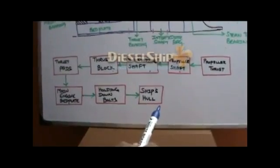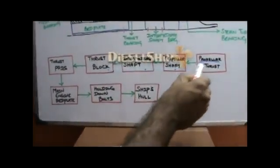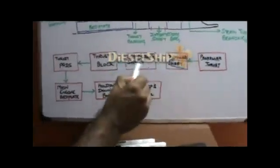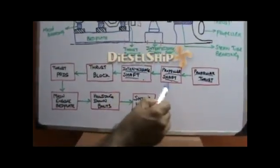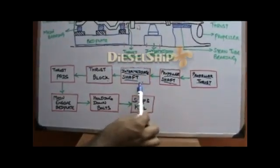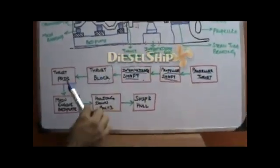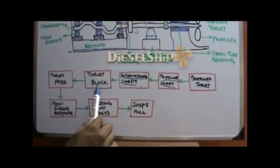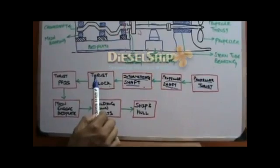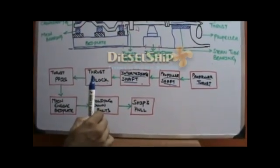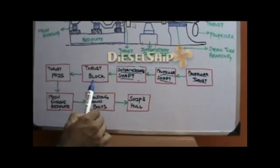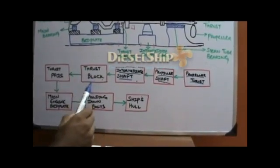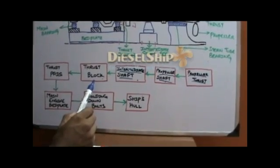As the propeller rotates, it creates a thrust called propeller thrust, which is taken up by the propeller shaft and passed on to the intermediate shaft. This happens because the propeller shaft and intermediate shaft are connected together, and the thrust is further absorbed by the thrust block. The main reason the thrust block is placed at the aft-most part of the engine is that the crankshaft must be saved from this propeller thrust — the crankshaft should never be subjected to the propeller thrust. Thus, the thrust block is placed at the aft-most part of the main engine so that no part of the crankshaft is subjected to the propeller thrust.